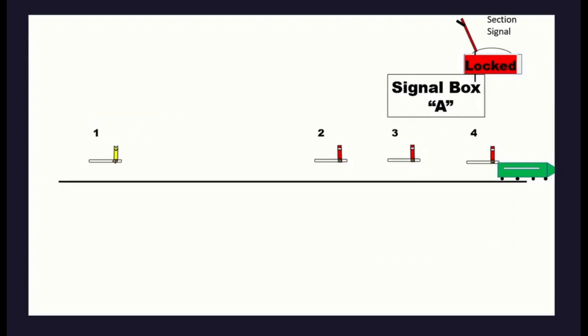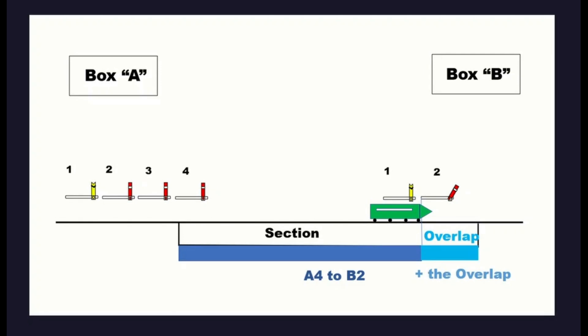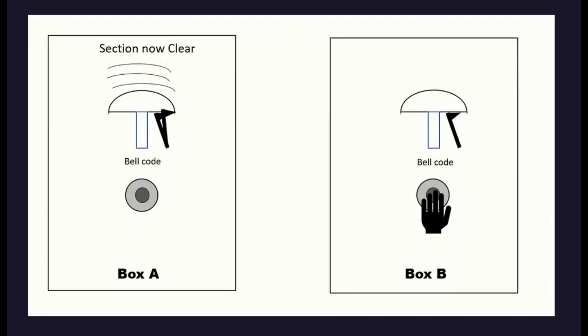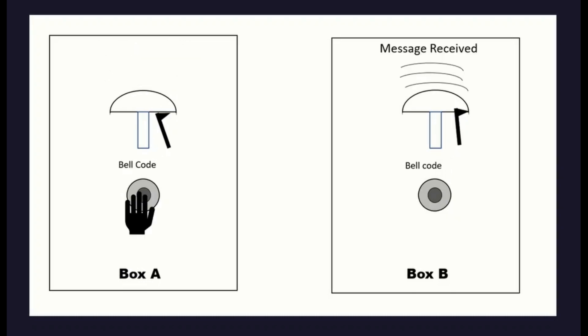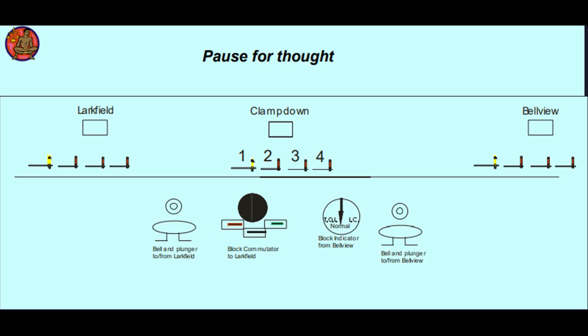When the train has entered the section, the signal at box A replaces the section signal to stop and it becomes locked until another line clear is given. Devices and apparatus at box B prevent another line clear being given until the train has passed the first stop signal and the overlap. When the train clears the section and the last wheels clear the overlap, the signaller at box B will put the B2 signal to danger, then send a bell code to box A to advise that the train has cleared the section. Box A replies. Box B turns the commutator back to normal and the indicators at both boxes return to normal — back to square one. There is a pause for thought exercise in the workbook to reinforce absolute block signalling.